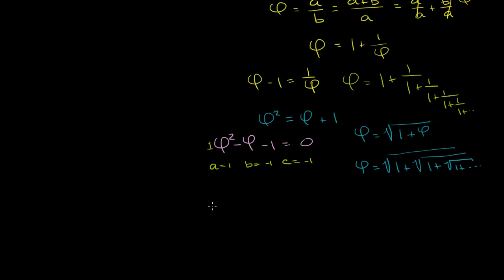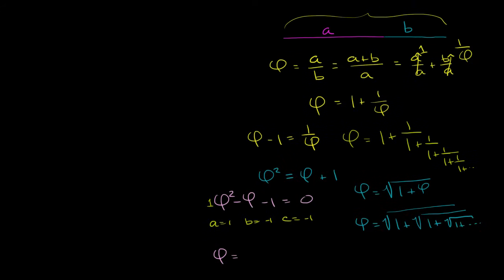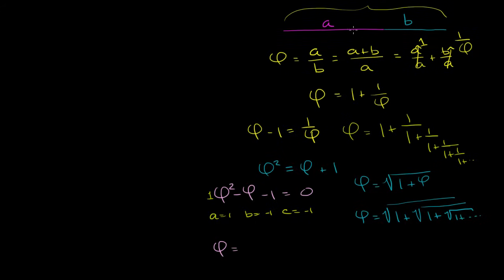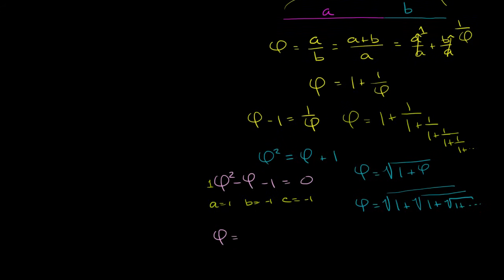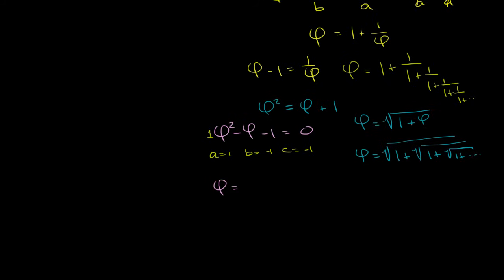We can solve for phi using the quadratic formula. Here a equals 1, b equals negative 1, c equals negative 1. We only care about the positive solution since we're dealing with positive distances. So phi equals negative b, which is 1, plus or minus the square root of b squared minus 4ac. That gives us 1 plus or minus the square root of 1 plus 4, all over 2a, so all over 2.